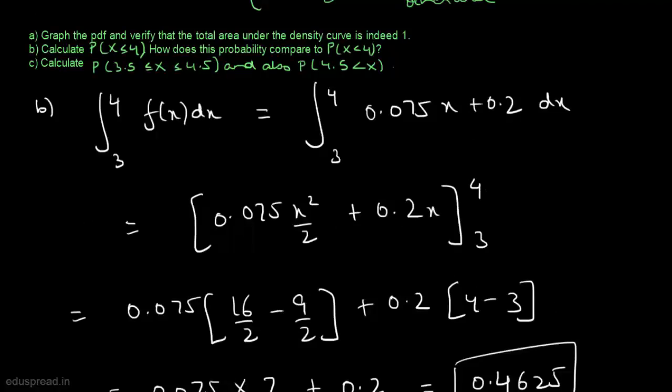Additionally, we have to compare this to the probability that x is less than 4. Because this is a continuous random variable, the equal-to sign does not matter. So the probability that x is less than 4 is also equal to 0.4625. These two probabilities are the same in this case.